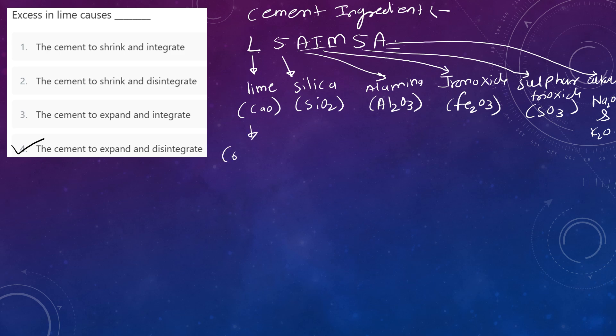Lime content is 60 to 65%. Silica content is 17 to 25%. Alumina content is 3 to 8%. Iron oxide content is 0.5 to 6%. Sulfur trioxide is 1.3 to 3%, or 1 to 3%. Alkalis content is 0.5 to 1.3%. These are the constituents and composition.